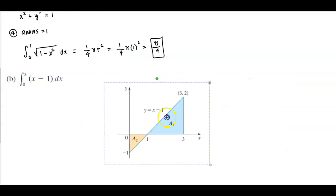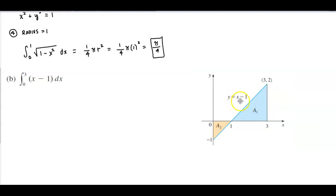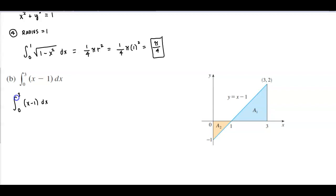So here's the graph, y equals x minus one, going from zero to three — there is the shaded part. This area below the x-axis is region two, and here we have region one, which is above the x-axis. Using geometry, we know that the integral from zero to three of x minus one dx means we're going to take area one and then subtract area two.